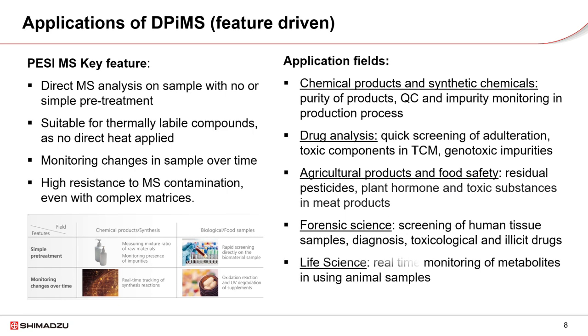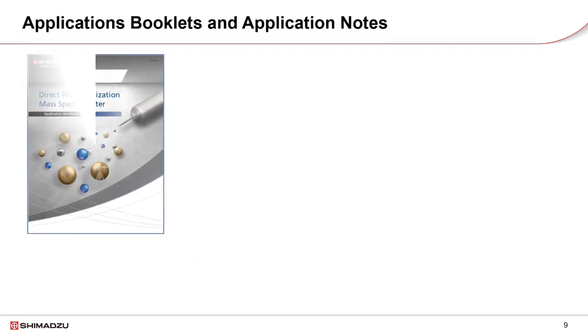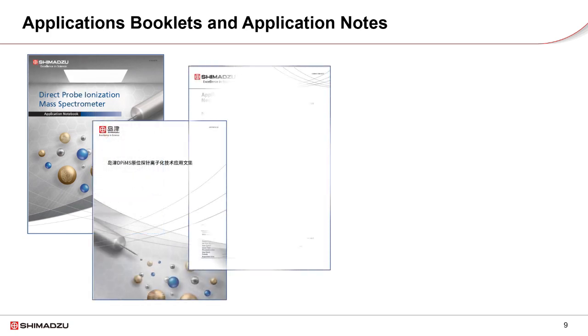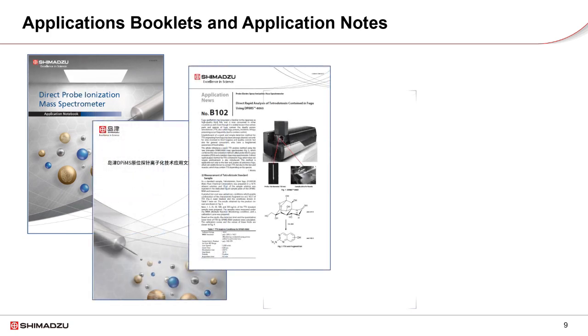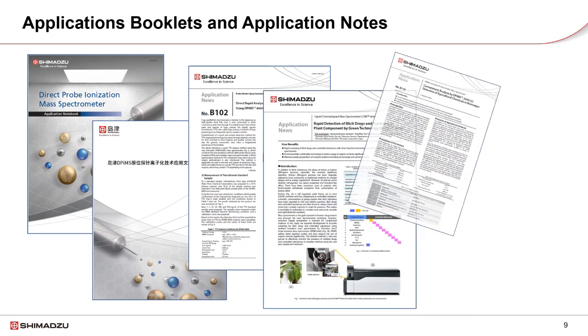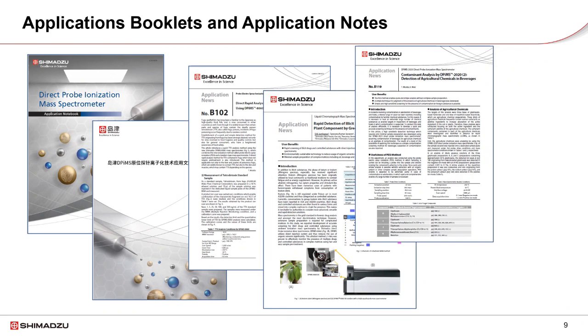Direct sampling from solid samples causes minimal destruction, enabling analysis of live tissues or cells. Many application notes, booklets, and research papers published in recent years serve as references for using DPI-MS in chemical analysis, food composition, forensic science, and life sciences applications.